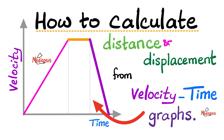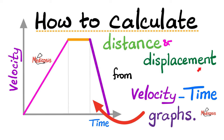Remember that distance is a scalar. It has a magnitude only but no direction, so there is no such thing as a negative distance. Conversely, displacement is a vector. It has a magnitude and a direction. Therefore, displacement could be positive or could be negative.